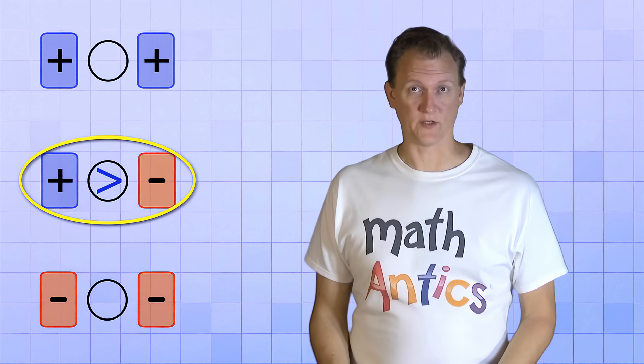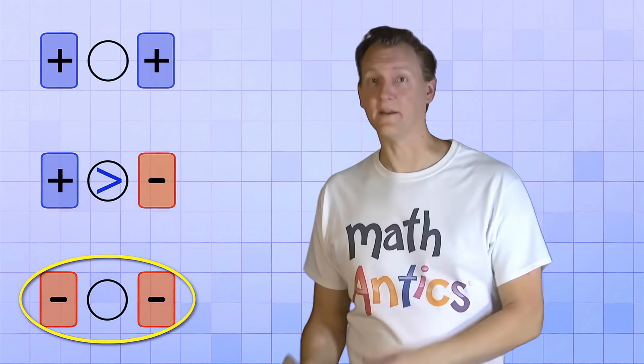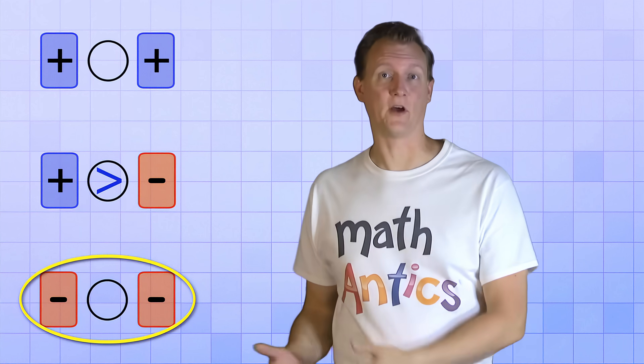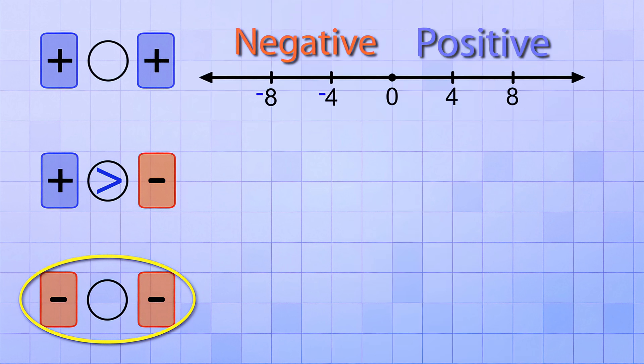The only tricky situation is when you have to compare two negative integers. Then you have to think about which one is further to the left on the number line. Again, a great way to do that is to identify the number that would normally be more positive on the positive side of the number line, and realize that it's more negative on the negative side.